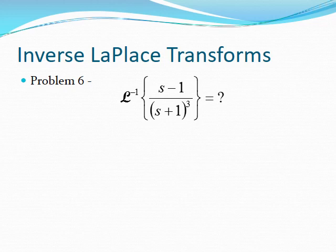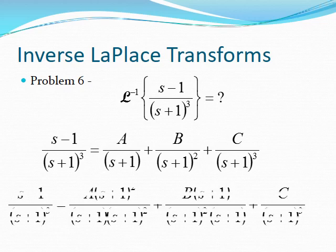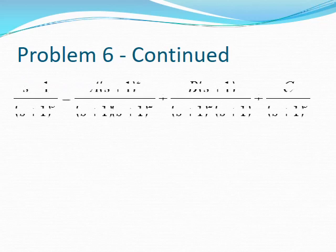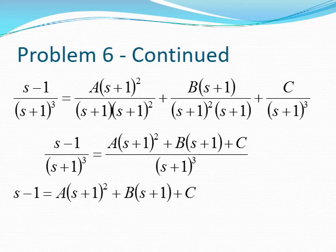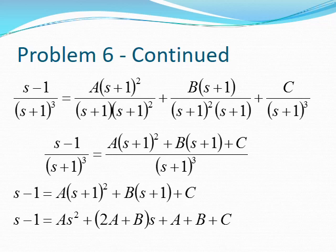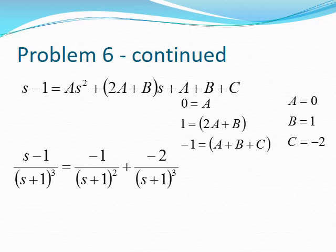Let's find some inverse Laplace transforms. For the first example, we write out the partial fraction decomposition, find the common denominator, do the algebra, multiply it out, and match coefficients to get three equations and three unknowns. Solving them gives values for A, B, and C, which we plug back into the partial fraction decomposition.